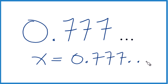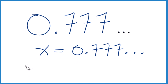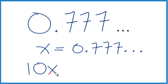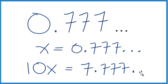Now we have the start of an equation, and if we can get a whole number here that would be helpful. So I'm going to multiply this by 10, because that would give me 7.777 repeating. But I also have to multiply this side by 10 as well — this is algebra — so 10 times x is 10x, and that equals 7.777 just keeps going.